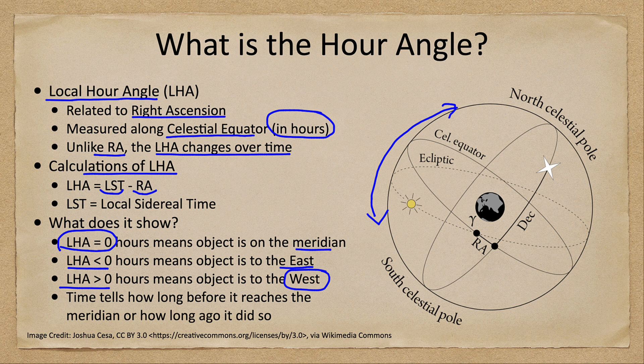The local hour angle can tell you roughly when the object is going to be transiting and when it will be highest in the sky, and therefore when it would be best to observe. When the hour angle is at zero, that's generally when you want to observe, because the object will be highest in the sky, traveling through the least amount of atmosphere, and therefore it will be the best time for observing that object. Essentially, the hour angle tells us how long before the object reaches the meridian, or how long ago it did pass the meridian.